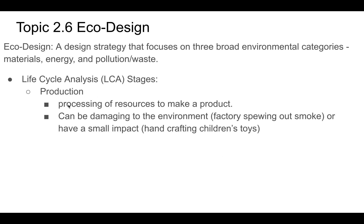The production stage is taking those raw materials and making a product — processing or manufacturing it. This can damage the environment: a factory can spew smoke, cause water pollution, or cause soil pollution. Alternatively it can have a small impact, like hand-crafting something, which has a much smaller impact than a factory that produces a lot of toxic waste.